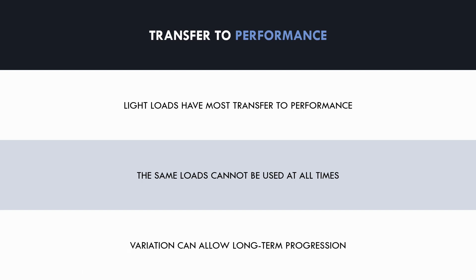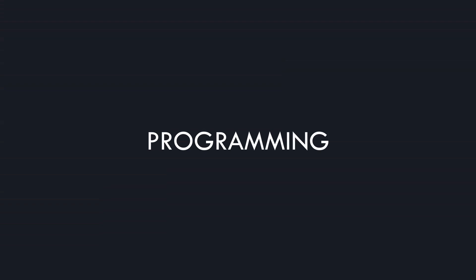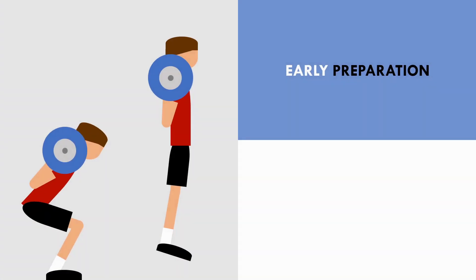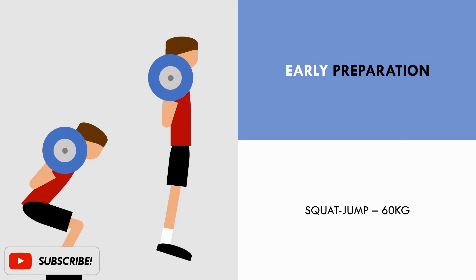Let's now explore how power training can be programmed at different times of the year using the information that we have previously established. In the early preparation period, the athlete doesn't need to be in peak condition for their sport, therefore more general training methods can be used. For power training, this means that we can use heavier loads since they are less specific to athletic performance. These heavier loads will emphasise force output, which can potentiate the lighter loaded power training that will be used later in the preparation cycle. For example, the squat jump may be implemented in this period with a load of 60 kilos. This may be a fairly heavy load for this particular athlete, meaning that force output will be high, but jump height will be low.